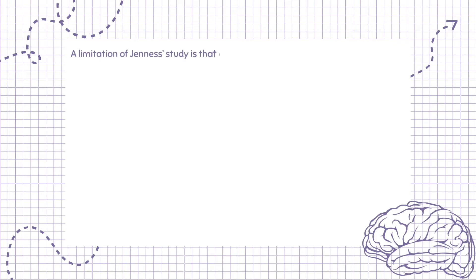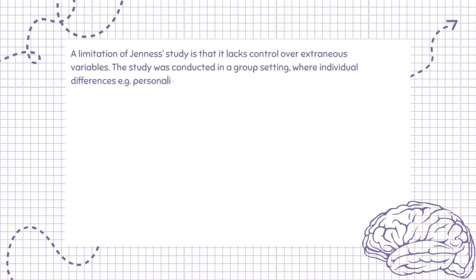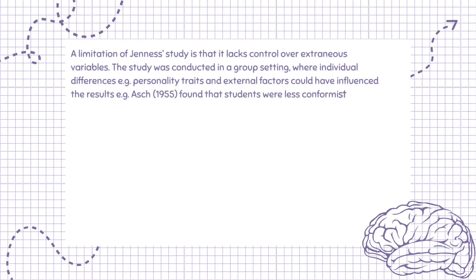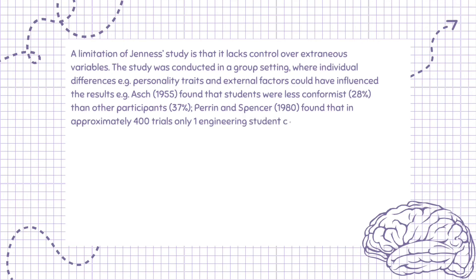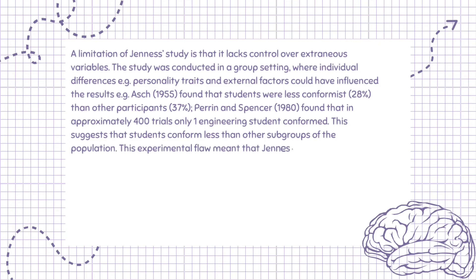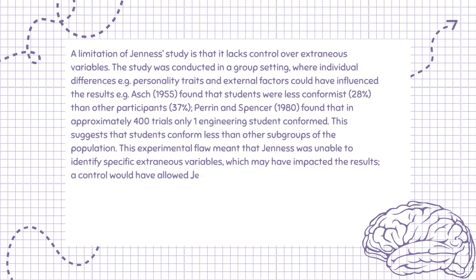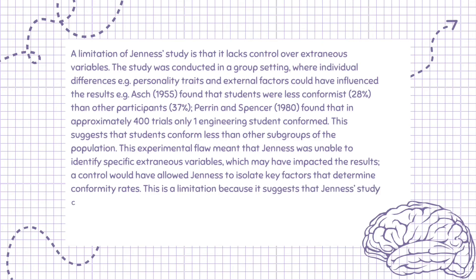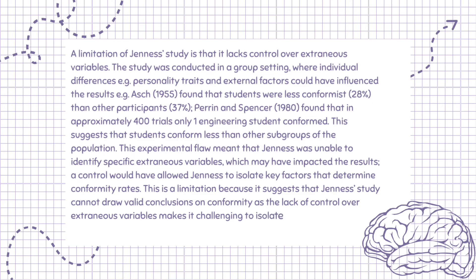A limitation of Jeunesse's study is that it lacks control over extraneous variables. The study was conducted in a group setting where individual differences, e.g. personality traits, and external factors could have influenced the results. For example, Asch, 1955, found that students were less conformist at 28% than other participants at 37%. Perrin and Spencer, 1980, found that in approximately 400 trials only one engineering student conformed, suggesting that students conform less than other subgroups of the population. This experimental flaw meant that Jeunesse was unable to identify specific extraneous variables which may have impacted the results; a control would have allowed Jeunesse to isolate key factors that determine conformity rates. This is a limitation because it suggests that Jeunesse's study cannot draw valid conclusions on conformity, as the lack of control over extraneous variables makes it challenging to isolate the specific impact of the independent variable on participants' behavior accurately.